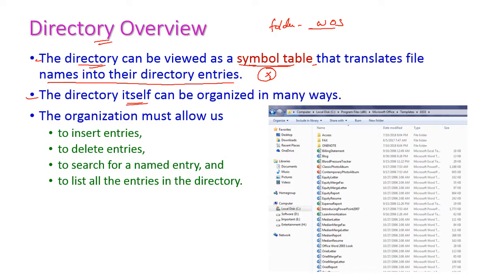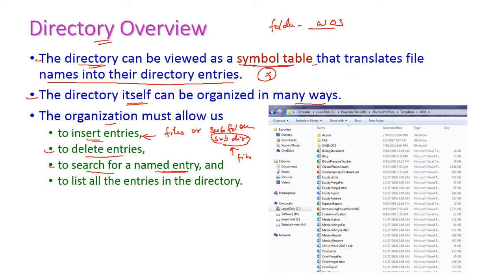The directory itself can be organized in many ways, and the organization must allow us to insert entries — that is, we can insert files or subdirectories — and we can delete entities, meaning we can delete subdirectories. To delete a subdirectory, we must ensure there are no files in it. We can also search for named entries using a search option, and list all the entries in the directory.